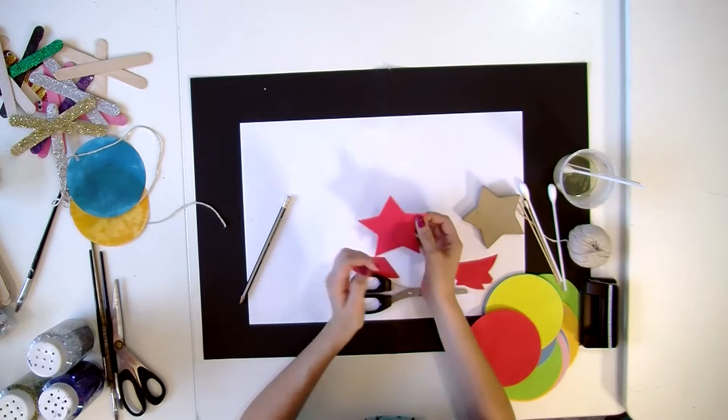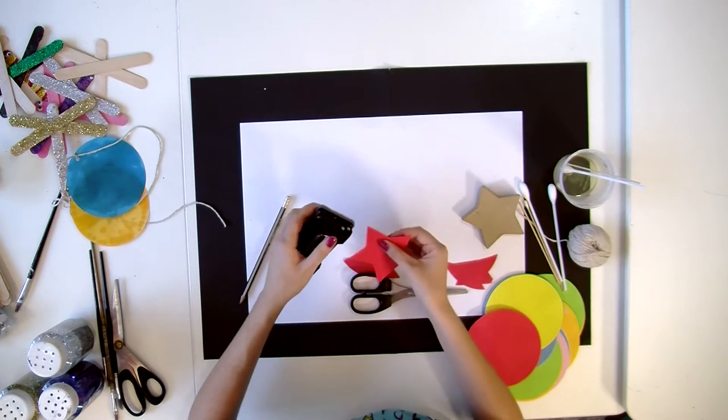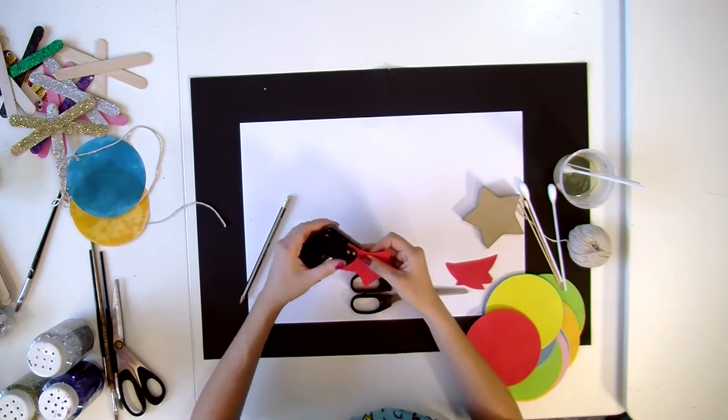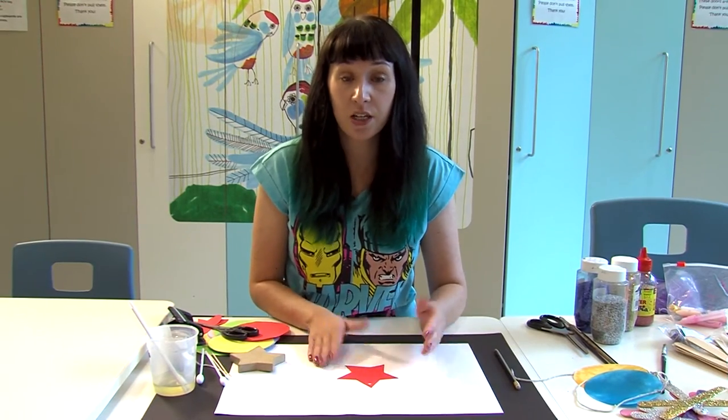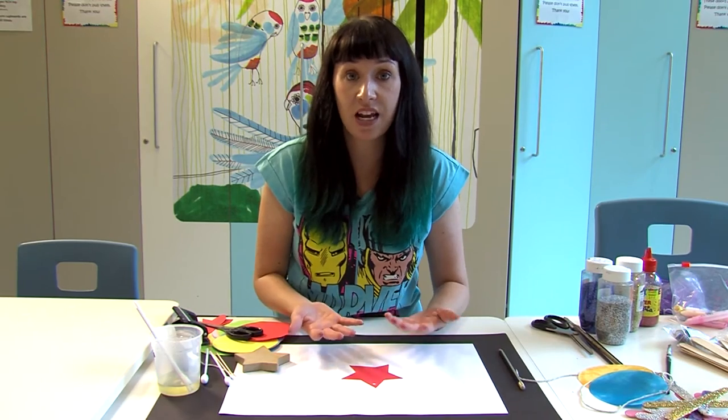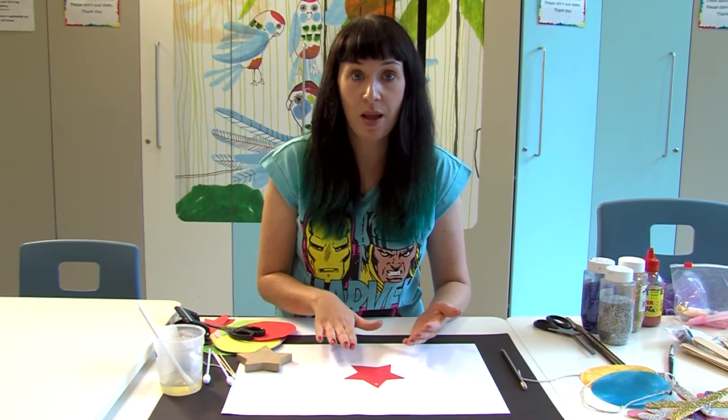Next we're going to punch a hole in it so we can hang it up later with some string. Now when you're doing this at home, it's a good idea to put some newspaper or something underneath because the oil will go through the paper. You don't want to get it all over your tabletop.